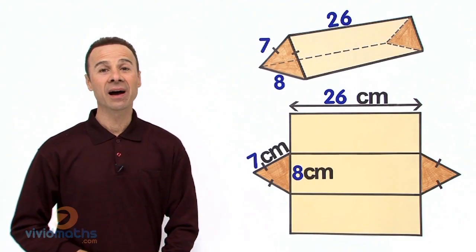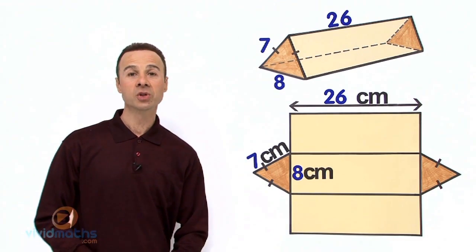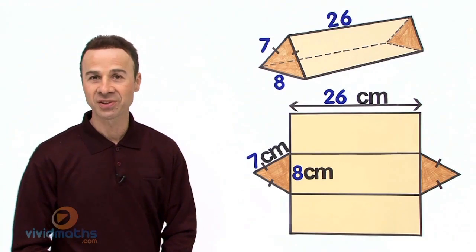Hi guys, they say there are two sides to every story. Well, in this story it's called triangular prism. We are looking for the total surface area. There are five sides to this story.